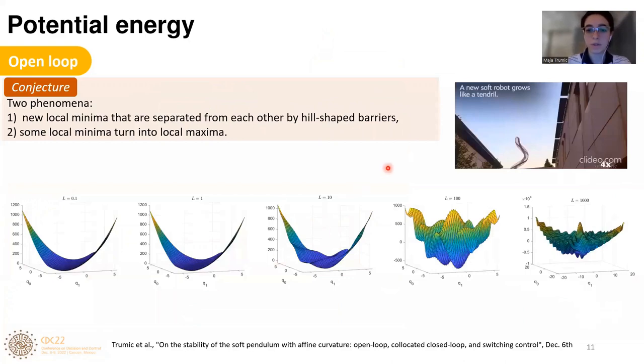Now, let us consider a robot that can have various length, for example, like this robot here that you can see in the video that can grow. Let's observe how different length affects the shape of the potential energy. We can see two phenomena. First, as L increases, new local minima appear that are separated from each other by hill-shaped barriers. Another observation is that some local minima can eventually turn into local maximum.